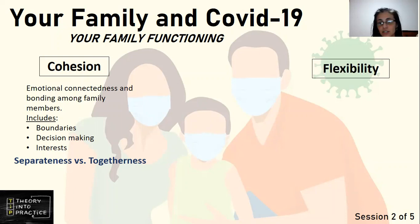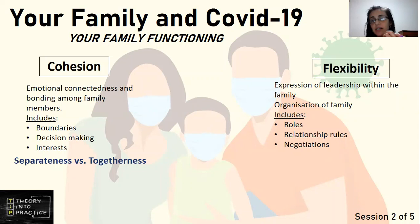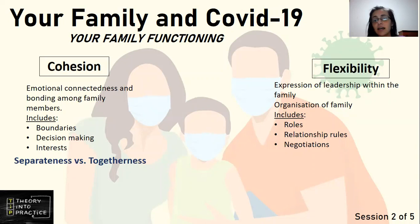Next, we have flexibility. Flexibility refers to the expression of leadership in the family as well as the organization of the family. This is basically the roles everyone should play in the family, whether there are rules for the relationship, and then negotiations. In other words, is there someone assigned to make dinner, do the laundry, handle discipline between mom and dad, maybe change a diaper for little sister, help the children with homework, etc. Then in these different relationships, are there any rules? For example, between the mother and child, are there rules that the child can't speak to the mother in a certain way?